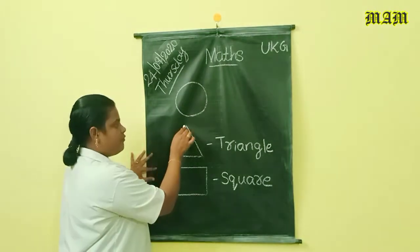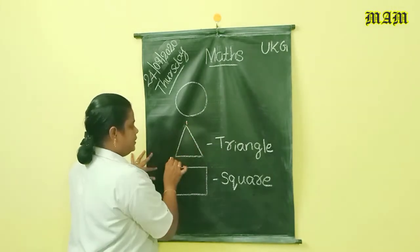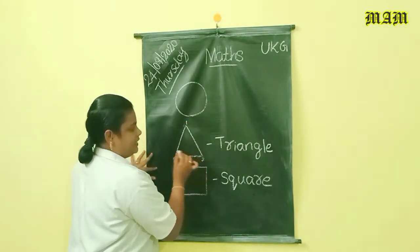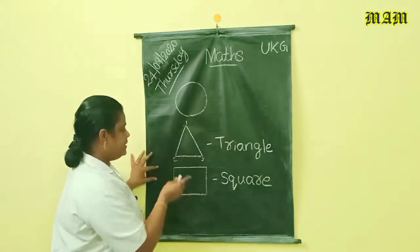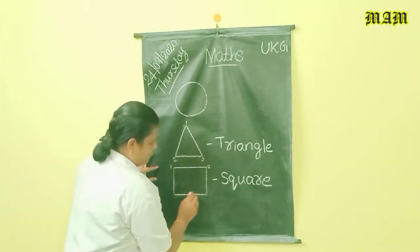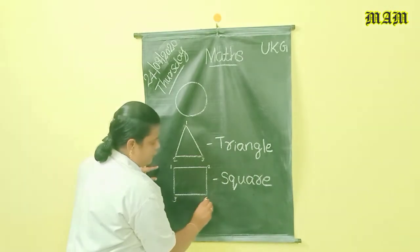Triangle has four corners? Three. One, two, three. Square has four corners. One, two, three, four. Okay.